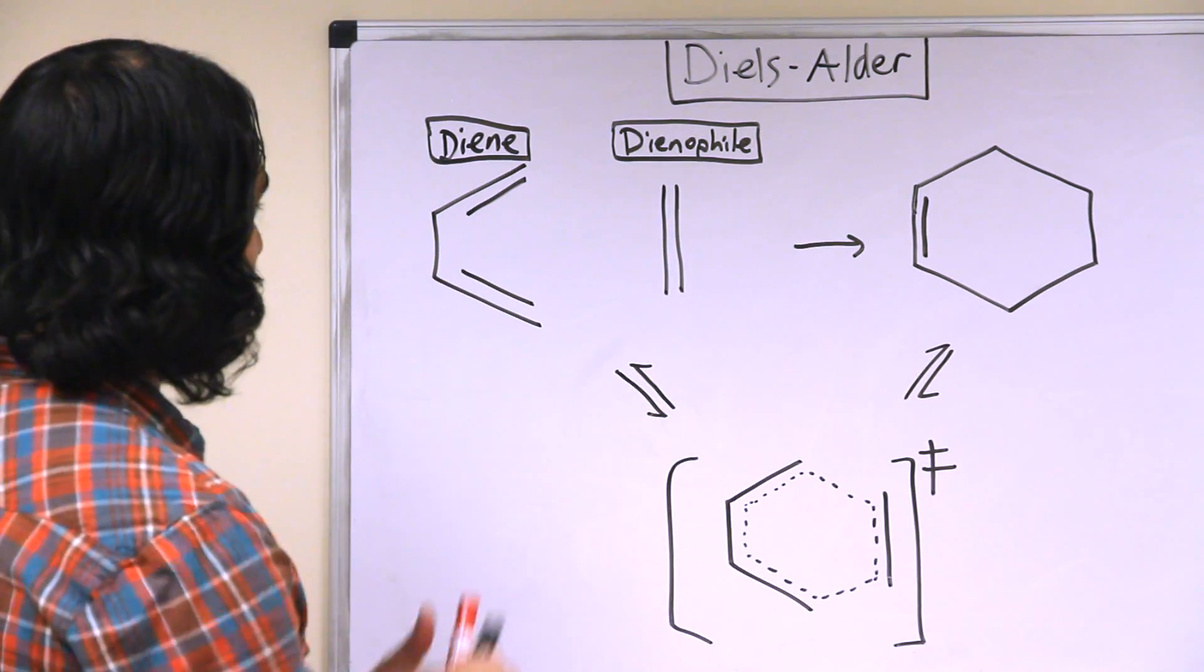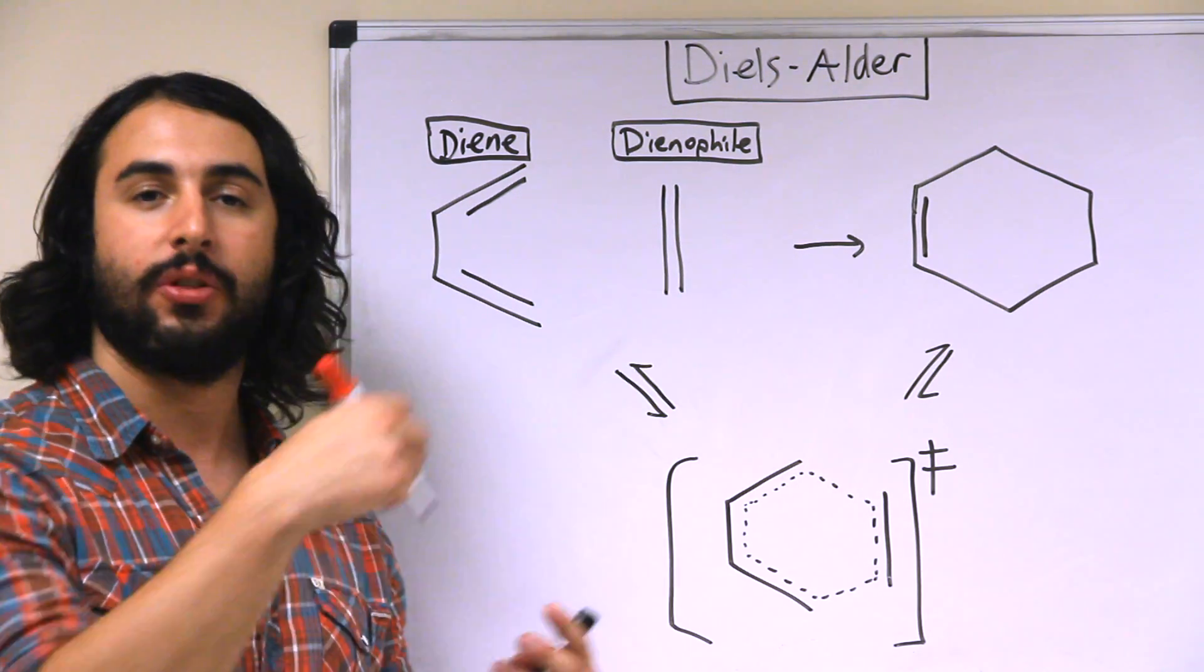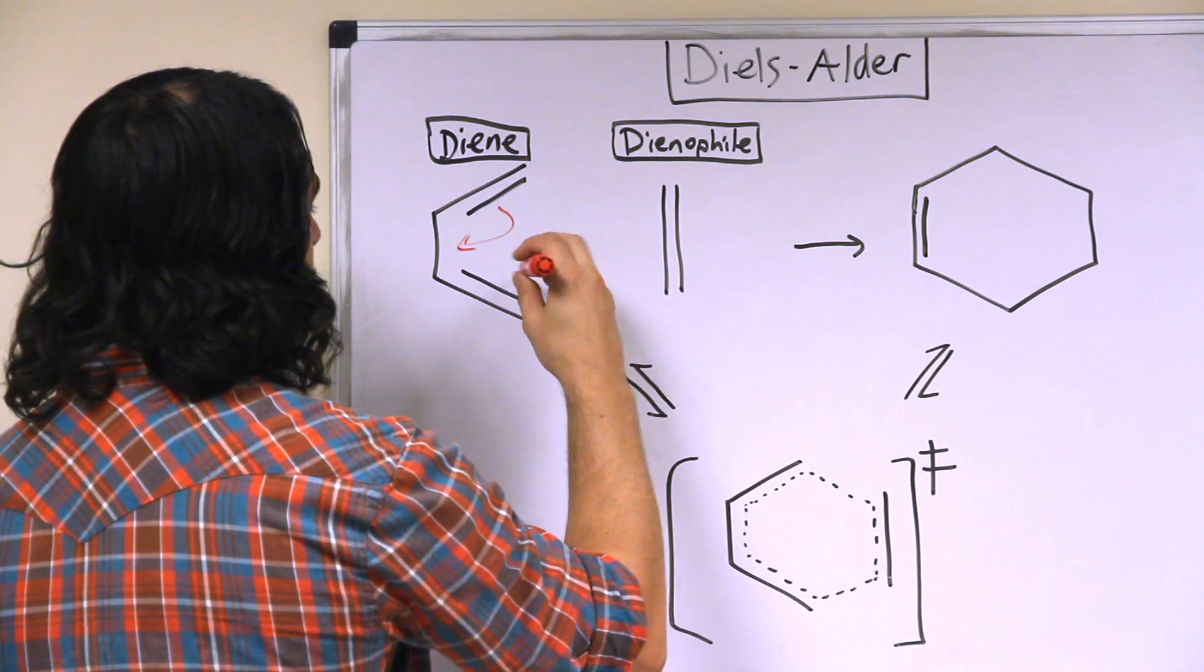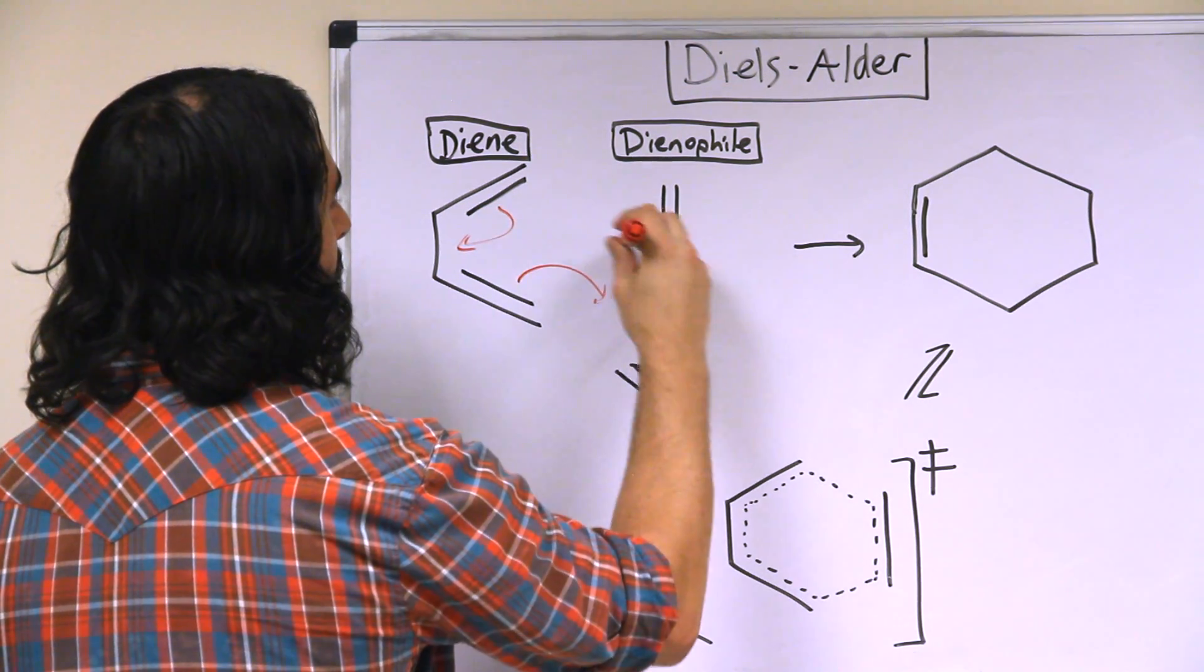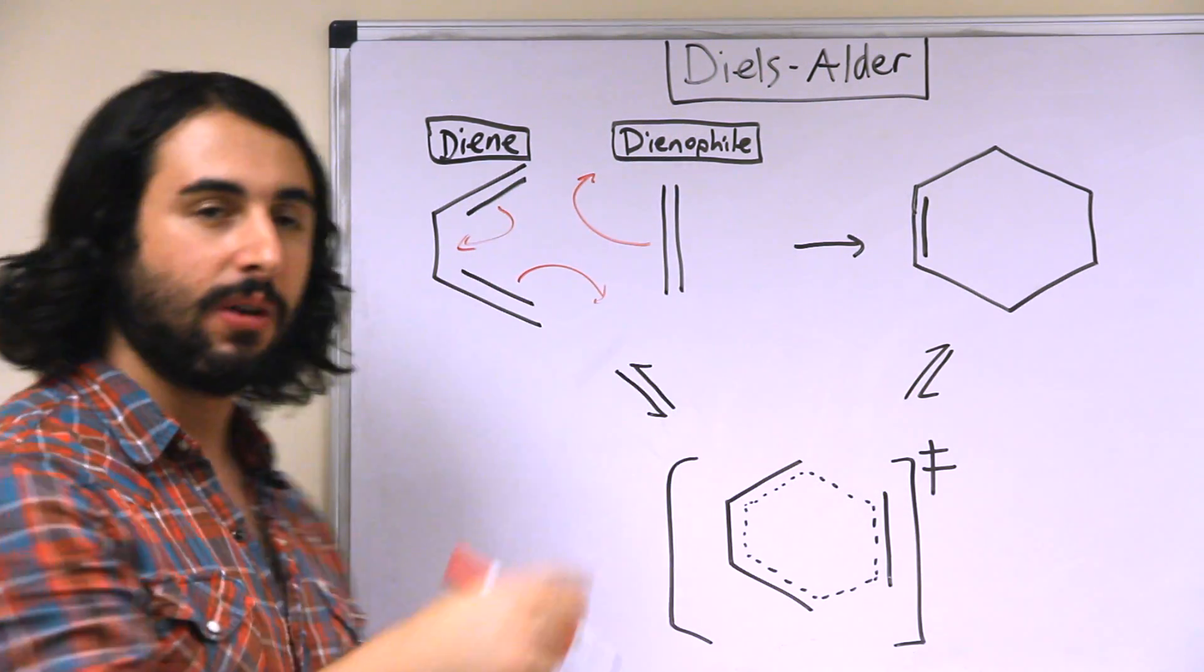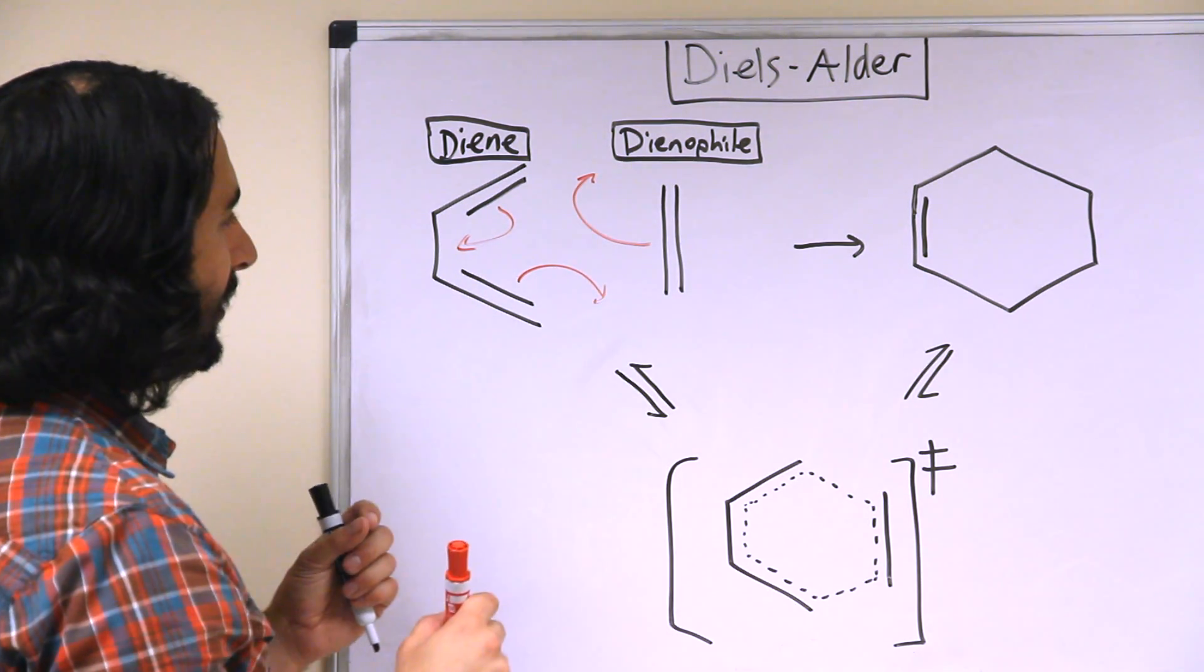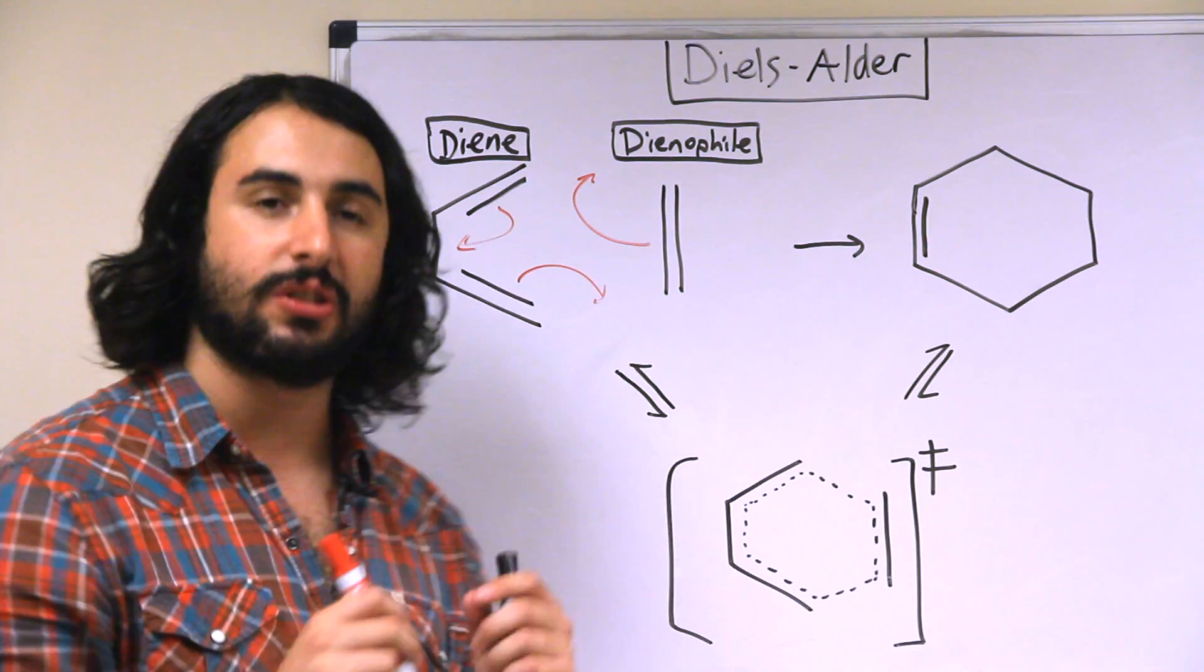So what happens is this is a concerted reaction where the pi electron density is shuffled around. So this is how we're going to draw these arrows. It is arbitrary which direction around the ring we draw the arrows because it is, once again, this is a concerted reaction.